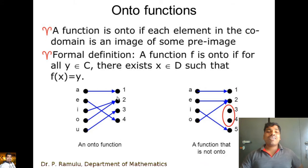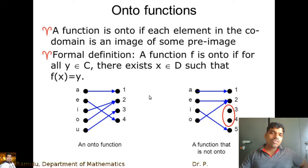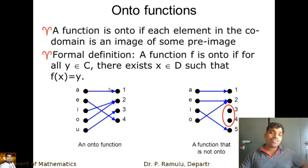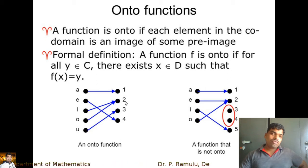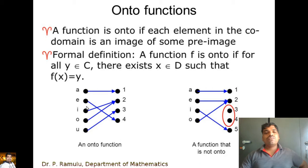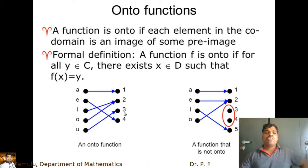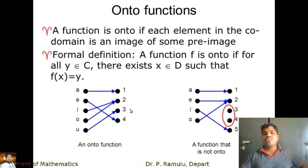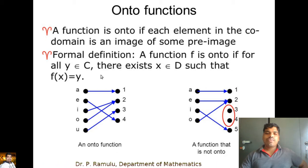Applying the formal definition: a function f is onto if for all y in C there exists x in D such that f(x) = y. For example, if I take 1 in C, there exists a in D such that f(a) = 1. If I take 2 in C, there exists i in D such that f(i) = 2. Similarly for 3 and 4. That is why it is an onto function.